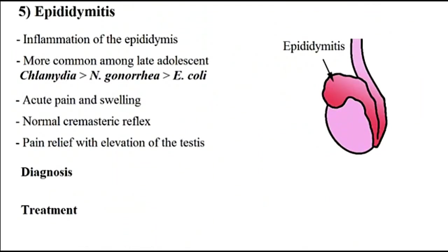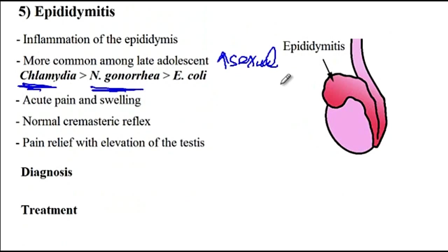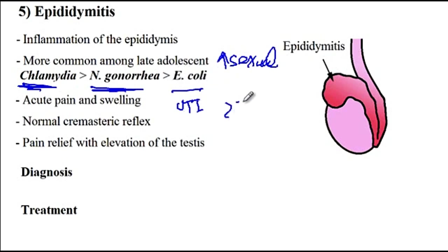The final condition is epididymitis, where there is inflammation of the epididymis. This condition is more commonly seen in late adolescence when patients are more sexually active. As a consequence, chlamydia and Neisseria gonorrhea, which are common sexually transmitted diseases, are more common causes of epididymitis in adolescent patients. E. coli, which is the number one cause of urinary tract infection, is a less common cause of epididymitis in adolescents. In older patients after the age of 35, however, E. coli is the more common cause compared to chlamydia and Neisseria gonorrhea.